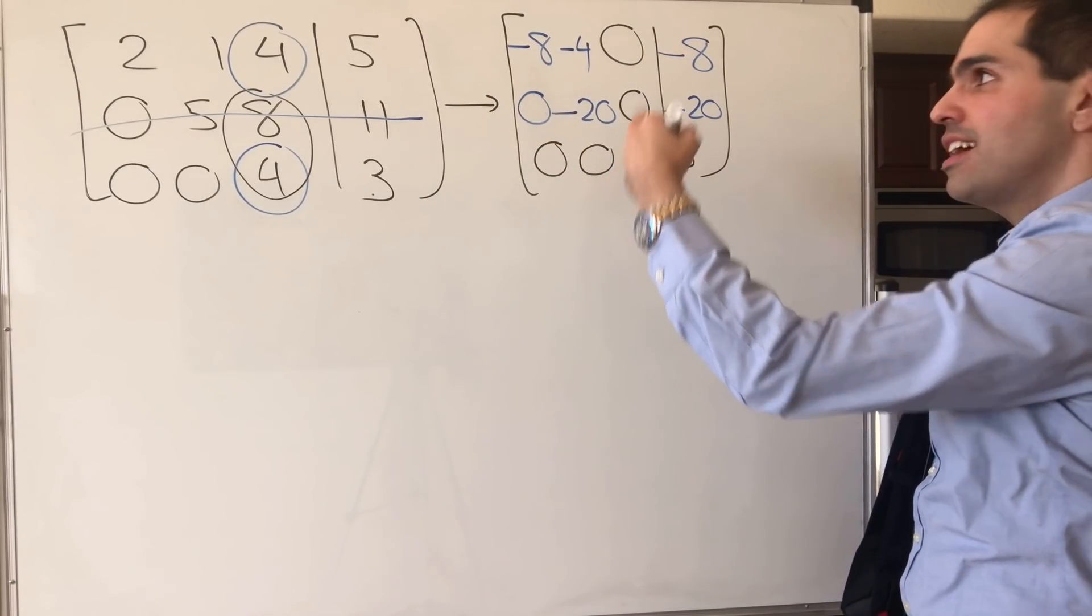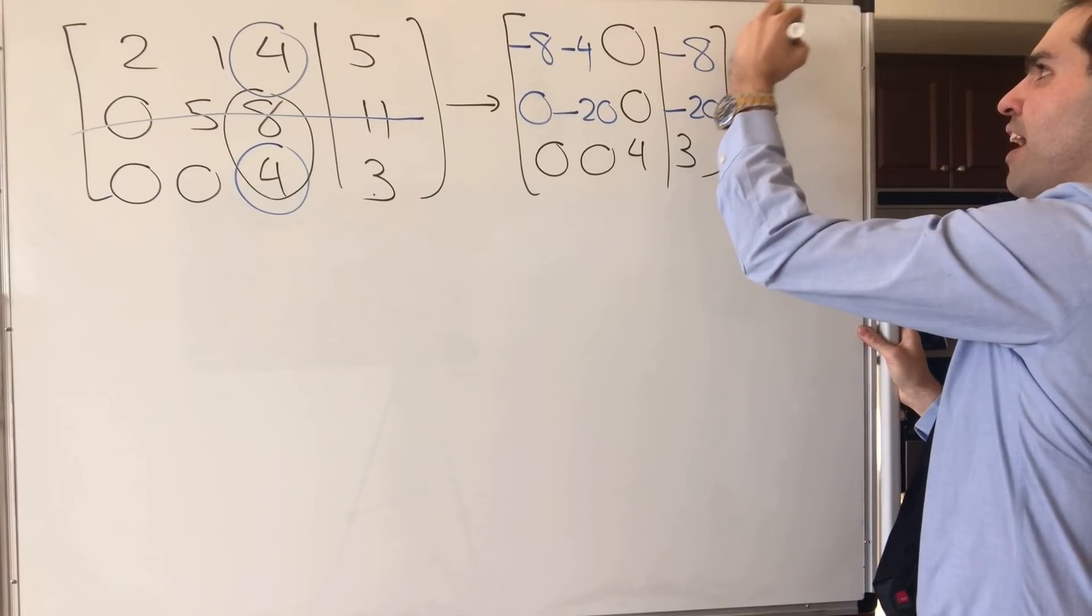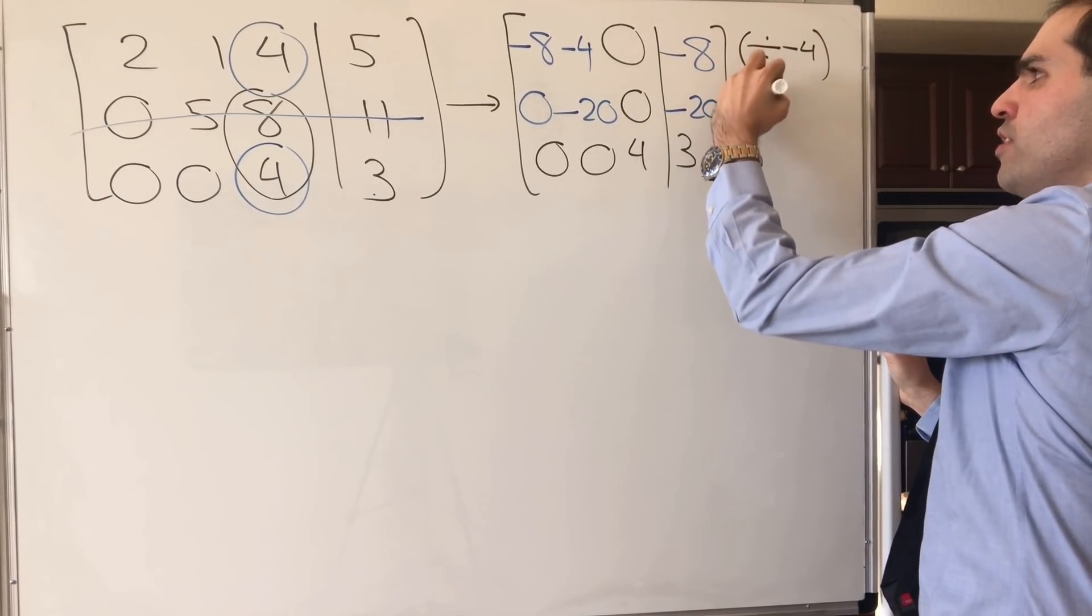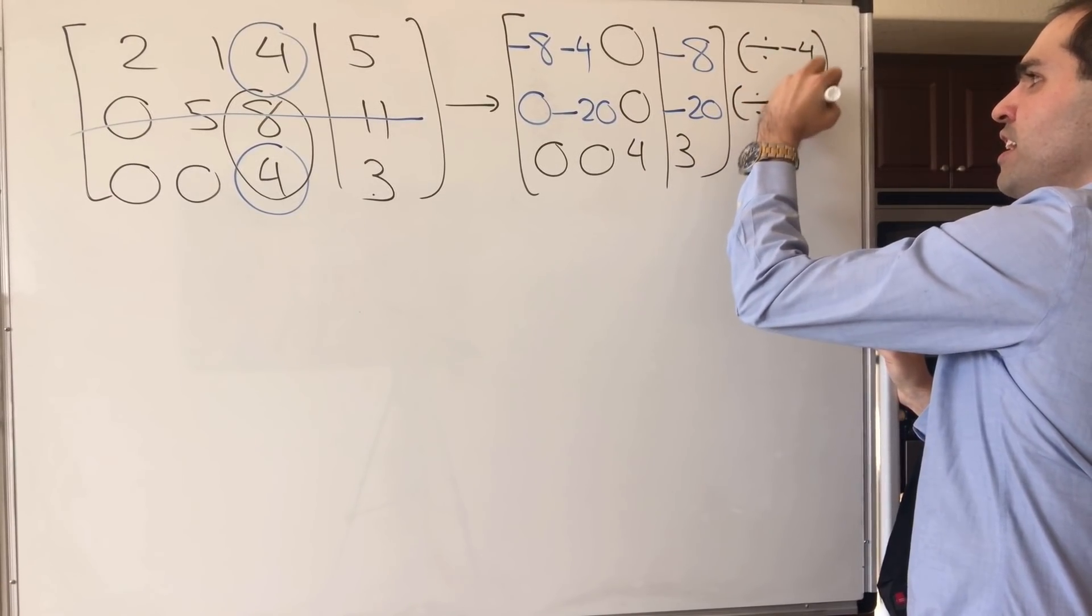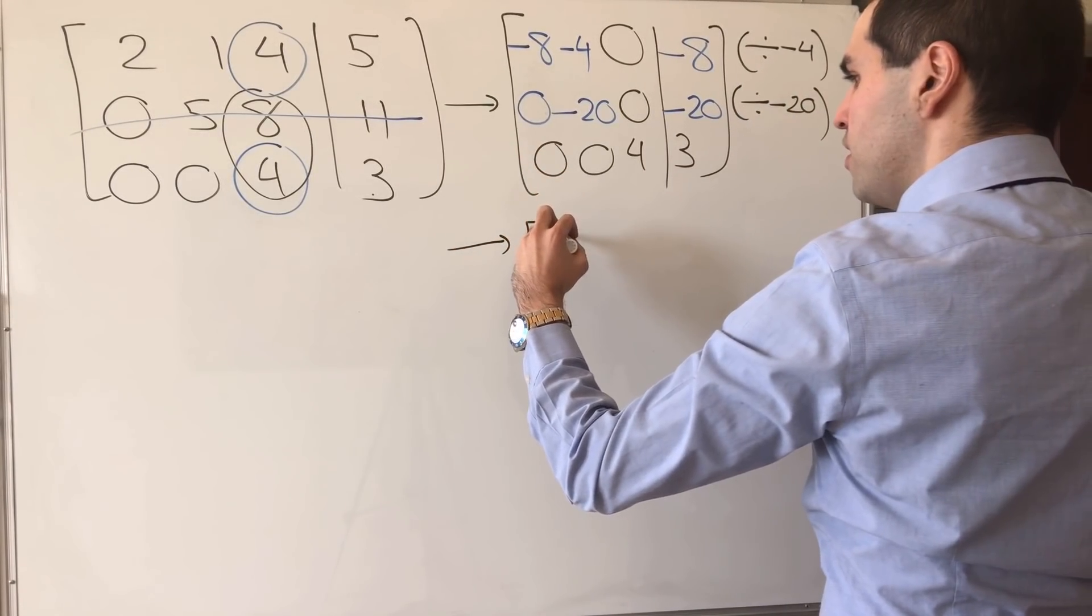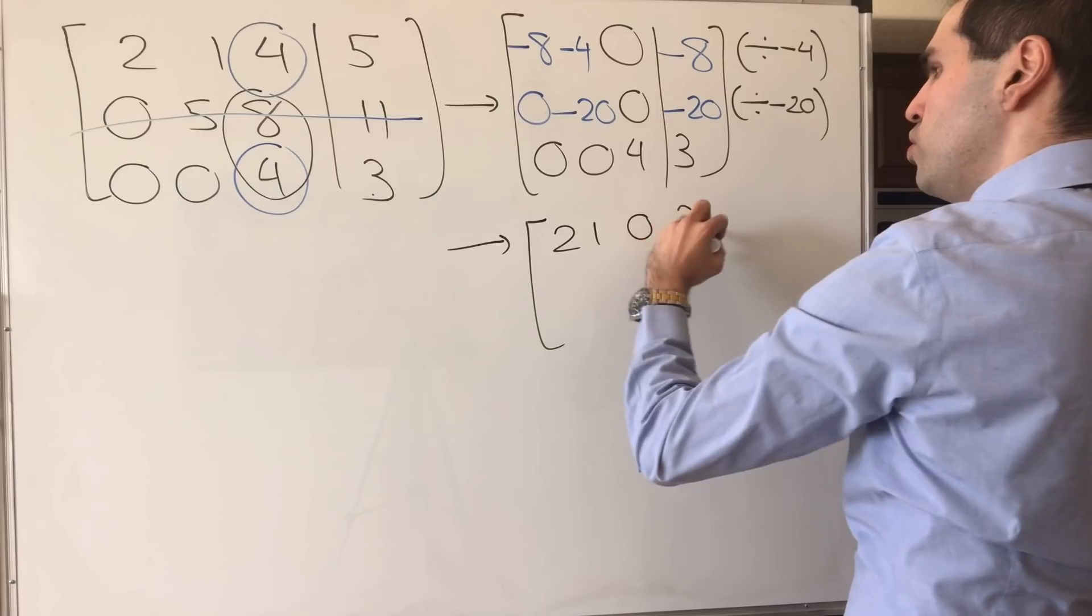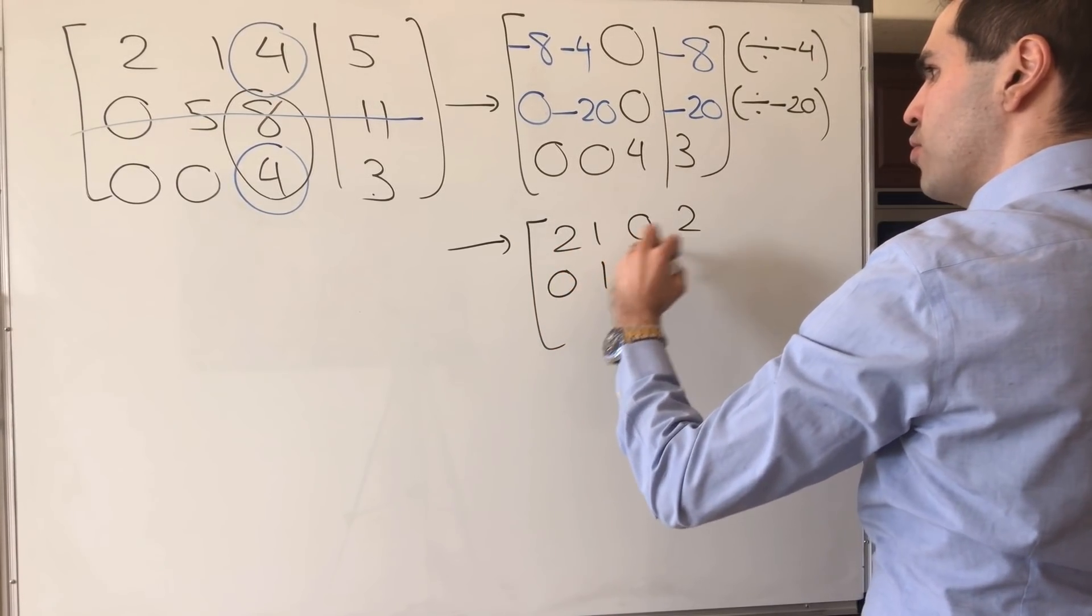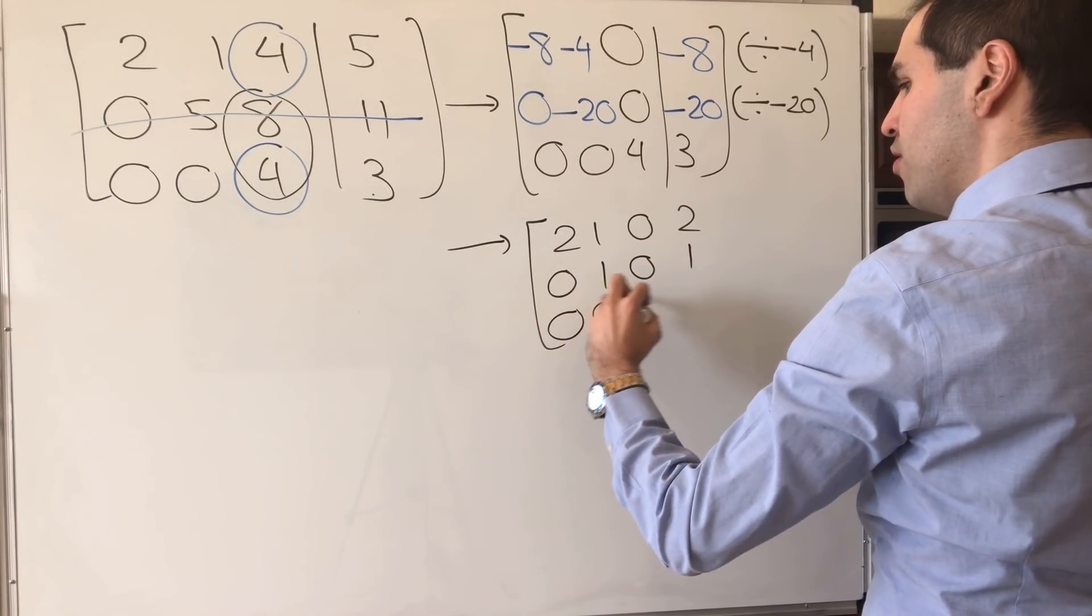here you can definitely clean things up. So you can divide this by minus 4, and you can divide this by minus 20. And, I believe, you get simply 2, 1, 0, 2, 0, 1, 0, 1, and 0, 0, 4, 3.